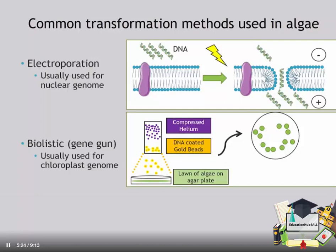Another method used to transform algae is biolistic delivery, or a gene gun. This is generally used for chloroplast genome transformation. In this case, compressed helium is used to propel DNA-coated gold beads at high speed into a lawn of algae. The DNA then integrates into the chloroplast genome, and the transformed algae can be selected for on antibiotic-containing media.